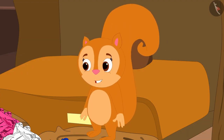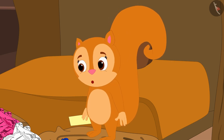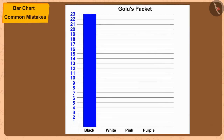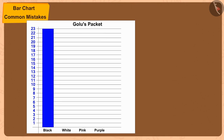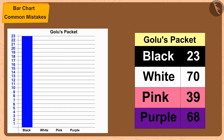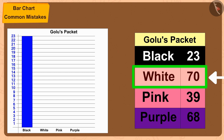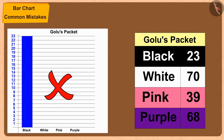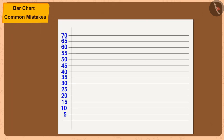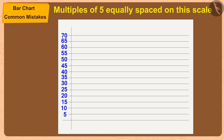Such a small thing! By the way, Gulu, you have chosen the wrong scale when creating the bar chart. Whenever we want to create a bar chart, we must first find the largest number in that information. Like, the largest in your table is 70. Now, you have written the equally spaced numbers from 1 to 23 here, so you will not be able to show 70 on this scale. But if we write multiples of 5 equally spaced on this scale, then you can easily show 70 on this scale.